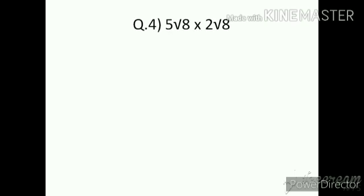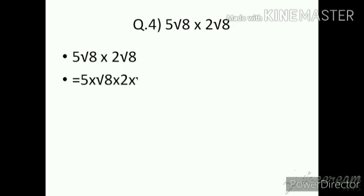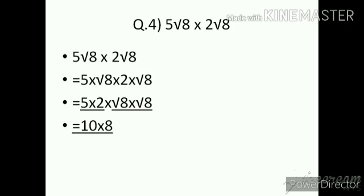Question number 4: 5√8 × 2√8. Here, √8 × √8 = 64, which is a perfect square. Take coefficients together: 5 × 2 × √8 × √8 = 10 × 64. Since 64 is a perfect square it becomes 8. So: 10 × 8 = 80.